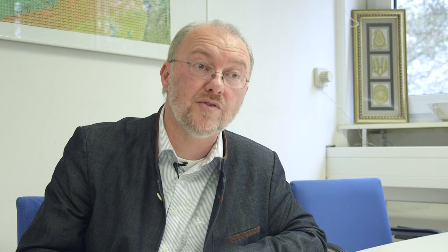Having this level of resolution really enables you to go directly into the composition space and describe your sample. You get rid of the mass scale and look only at the compositions and their relative abundances in the system, which are relative to the ion efficiencies in the system.